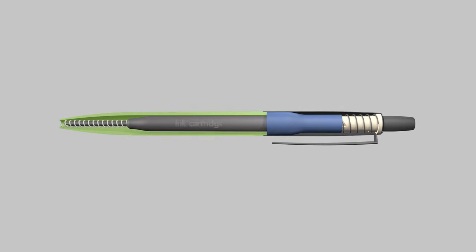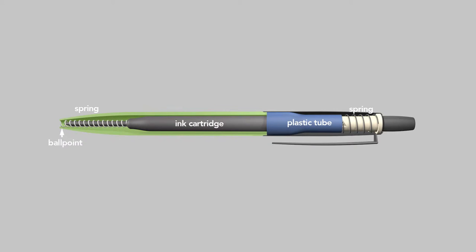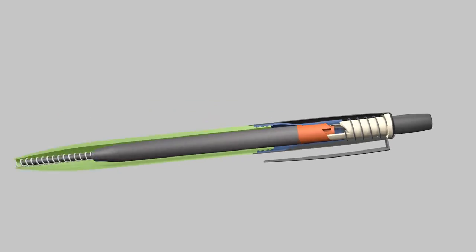The pen's barrel houses an ink cartridge with the ballpoint tip, two springs, one at the top and one at the bottom, and a plastic tube which is press-fit inside the metal barrel of the pen so that it's fixed in place. Inside that tube is where all the action happens.